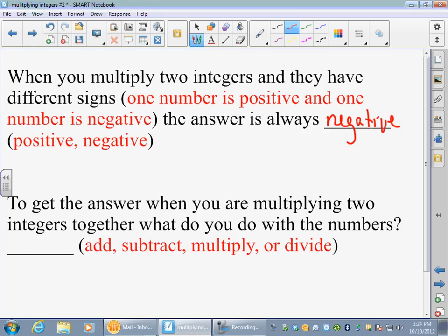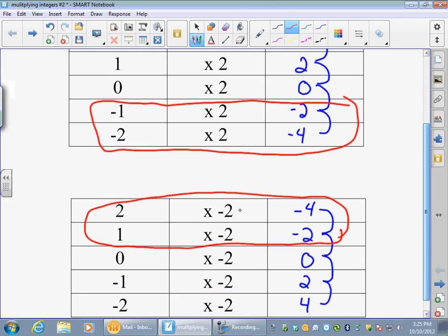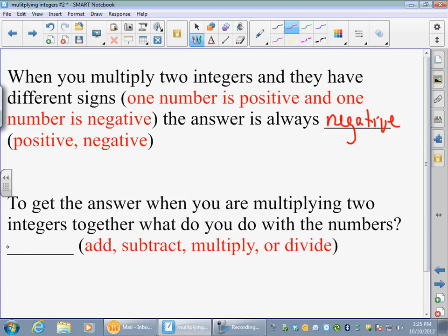And then the other part of it is what do we do to get the answer? Well, one times two is two. Two times two is four. Two times two is four. One times two is two. We're just multiplying again. It's a multiplication problem. We multiply. That's all. So very easy, very straightforward.